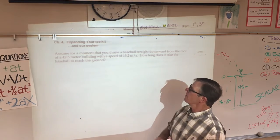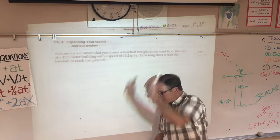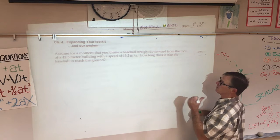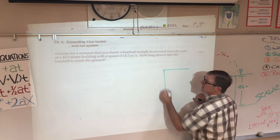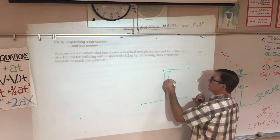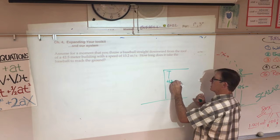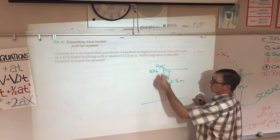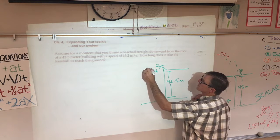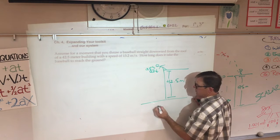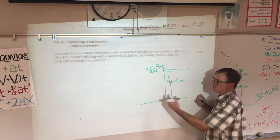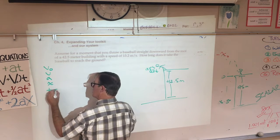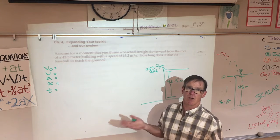Okay, assume for the moment that you throw a baseball straight downward from the roof of a 42 and a half meter building with a speed of 13.2 meters per second. How long does it take to hit the ground, to reach the ground? So again, we've gotten to a place in physics where I think a diagram of the situation is really helpful. This ball is thrown downward at 13.2 meters per second and presumably it speeds up and hits the ground going faster than 13.2 meters per second. Let's make a list. Again, you should make your own list before you watch the rest of this film.